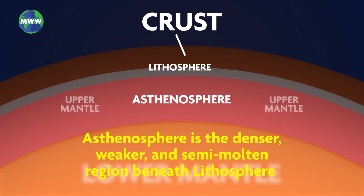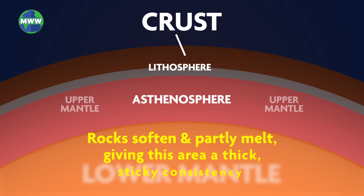The asthenosphere is the denser, weaker, and semi-molten region beneath the lithospheric mantle. This region is where rocks soften and partly melt, giving this area a thick, sticky consistency.